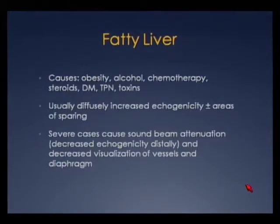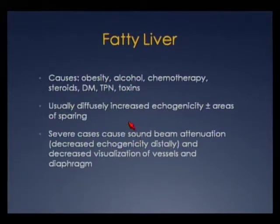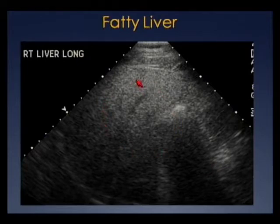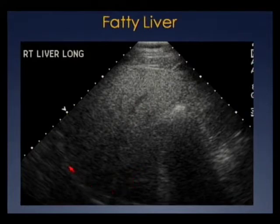Discussing parenchymal liver diseases, starting with fatty liver: the most common causes are obesity and excessive alcohol. We usually see diffusely increased echogenicity of the liver plus or minus areas of sparing, and in severe cases we'll see sound beam attenuation and decreased visualization of vessels and the diaphragm posteriorly. Here's a case of severe fatty liver where we have an echogenic liver but as we progress more posteriorly, we lose the sound beam — it basically attenuates.